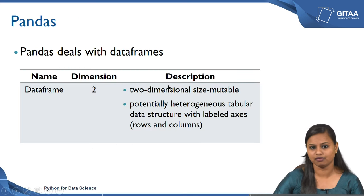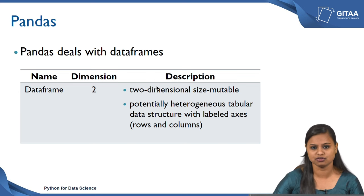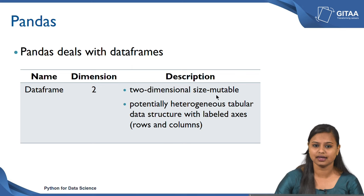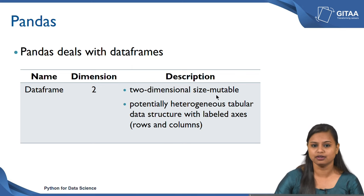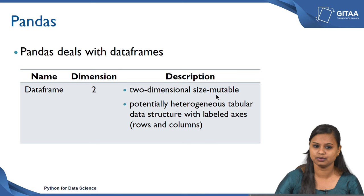A DataFrame consists of two dimensions: the first dimension is the row and the second dimension is the column — that is what we mean by two dimensional and size mutable. A DataFrame is a collection of data in a tabular fashion, where data is arranged in rows and columns. Each row represents a sample or a record, and each column represents a variable — the properties associated with each sample.